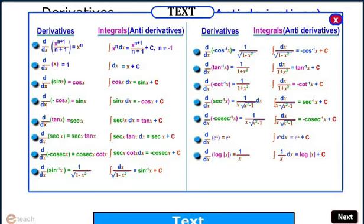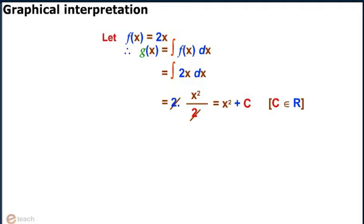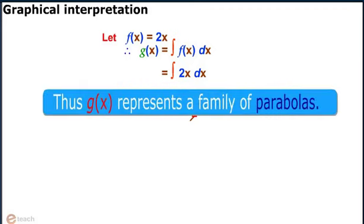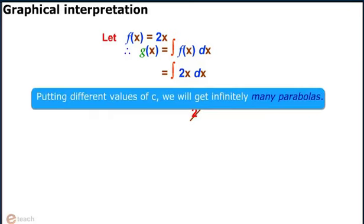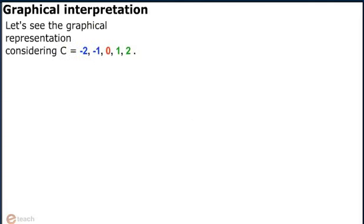Graphical Interpretation: Let f(x) equals 2x, then g(x) equals integration of f(x) dx, i.e., integration of 2x dx, which equals 2 times x²/2. Cancelling the common terms, we get the result as x² plus c, where c belongs to the set of real numbers. You will note that g(x) comes out to be a family of parabolas. Putting different values of c, we will get infinitely many parabolas. Let's see the graphical representation considering different values of c.